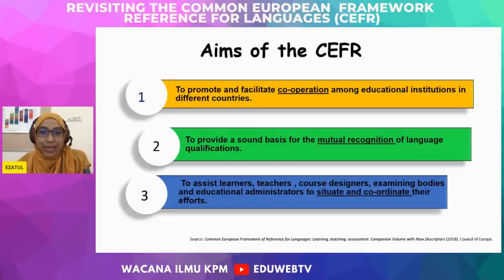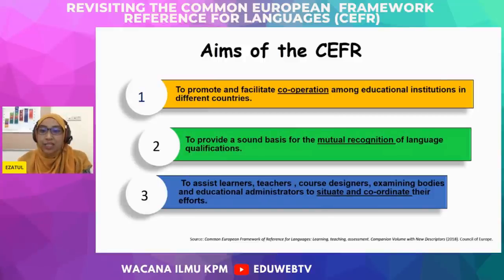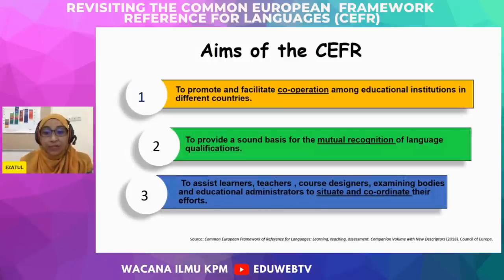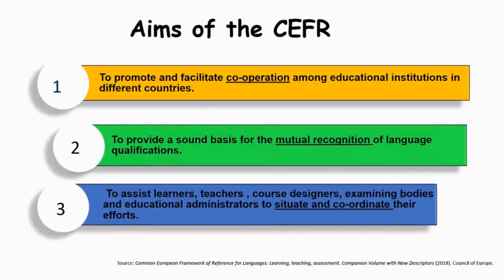There are three main aims of the CEFR. The first is to promote and facilitate cooperation among educational institutions in different countries that have adopted the CEFR, since all are referring to the same standardized framework. The second aim is to provide a sound basis for the mutual recognition of language qualifications — because we refer to a common reference, a B2 user of English in Malaysia would be able to use English in the same way as a B2 user in, for example, Thailand.